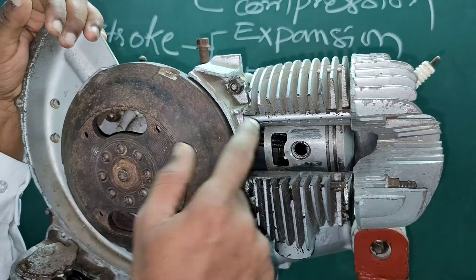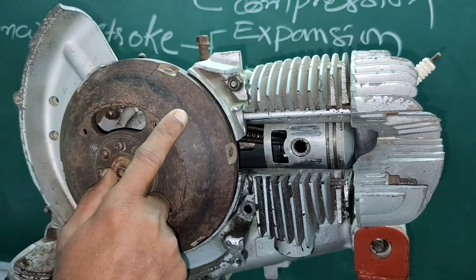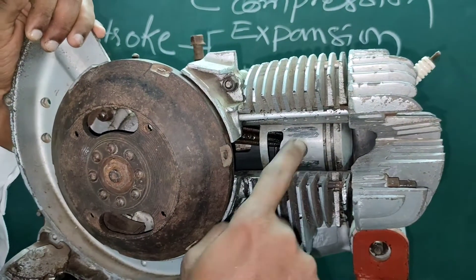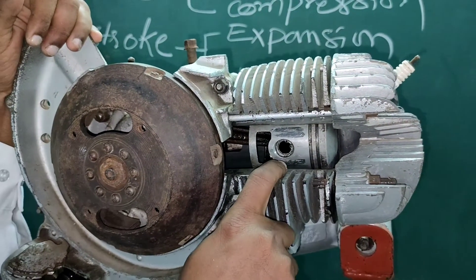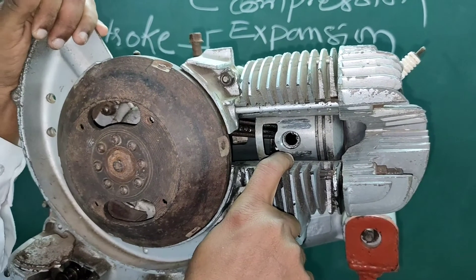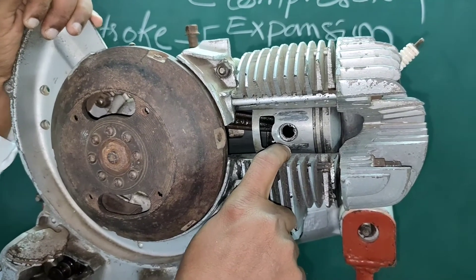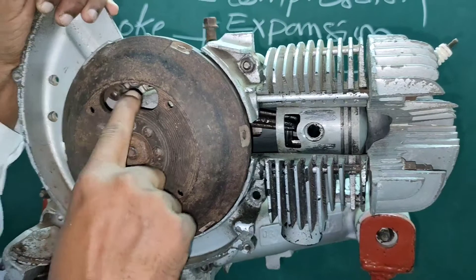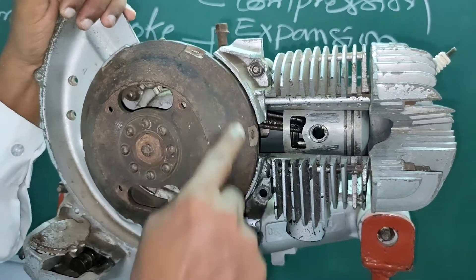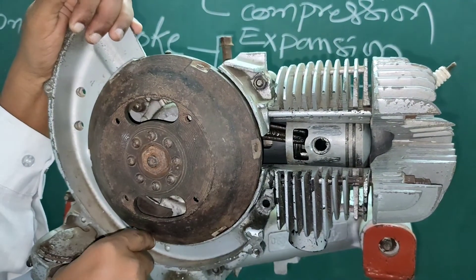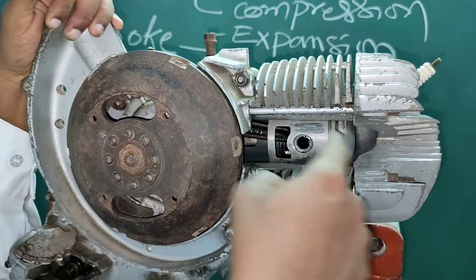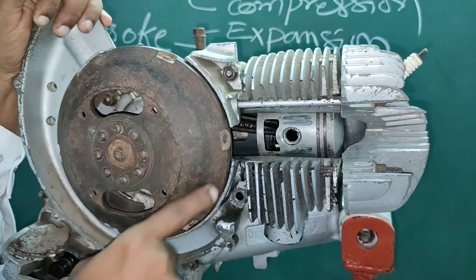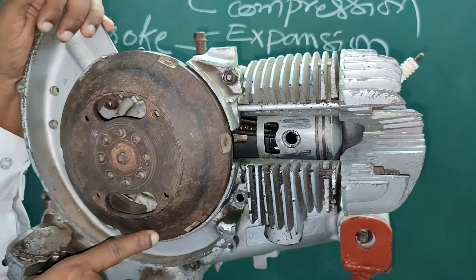So the two-stroke engine goes up and down. This is the upward motion. This is the crankshaft — that is half of the revolution. The stroke in the crankshaft is half of the revolution.